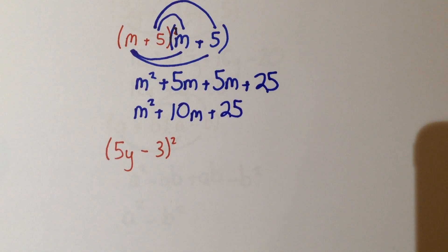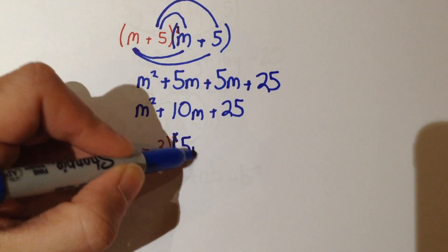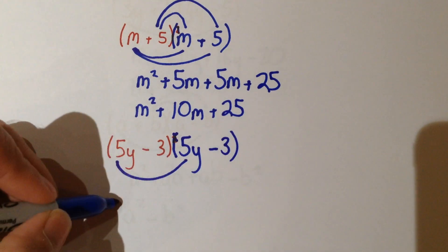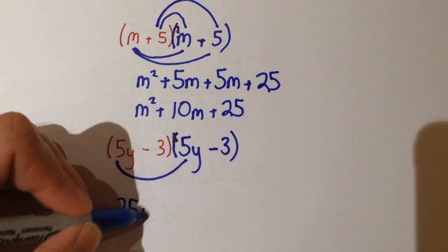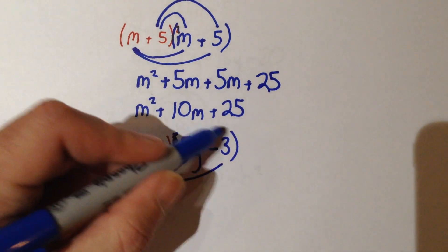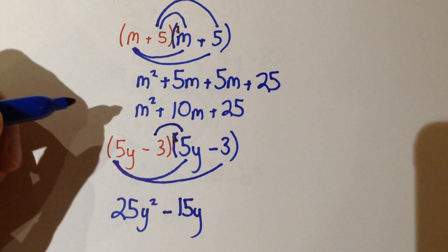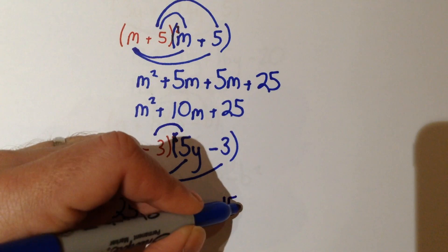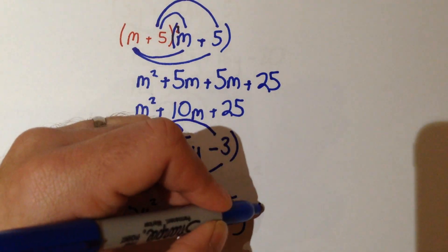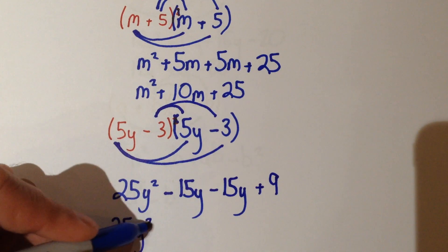We can do the same with the next example: 5y minus 3, all squared. Remove the squared and rewrite the same bracket again, so 5y minus 3. 5y multiplied by 5y: 5 times 5 gives us 25, y times y is y squared, so 25y squared for the first term. 5y times minus 3 gives minus 15y. Then minus 3 times 5y: minus 3 times 5 gives us minus 15, hence minus 15y. And minus 3 multiplied by minus 3 gives us positive 9. Collecting terms: we get 25y squared, minus 15y take away another 15y gives minus 30y, and then plus 9.